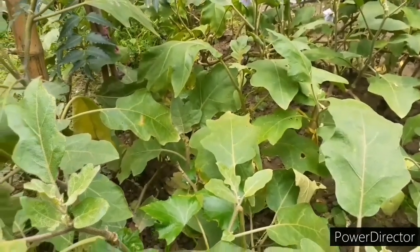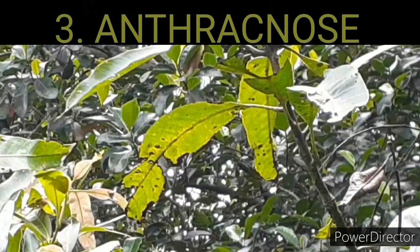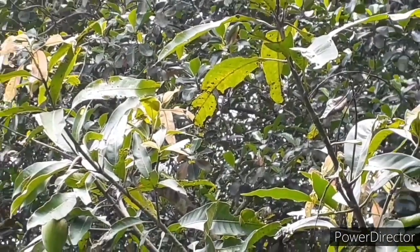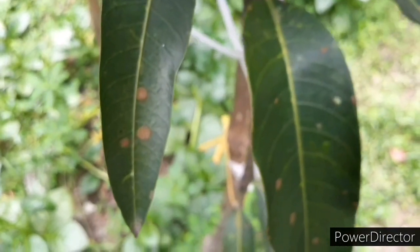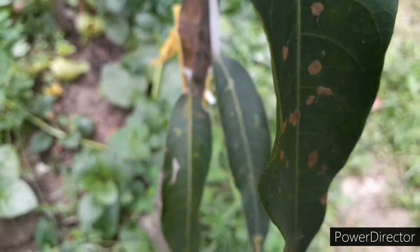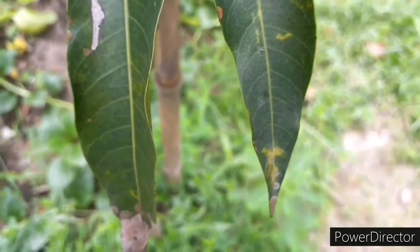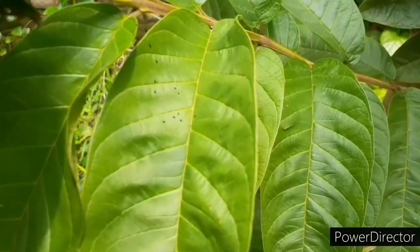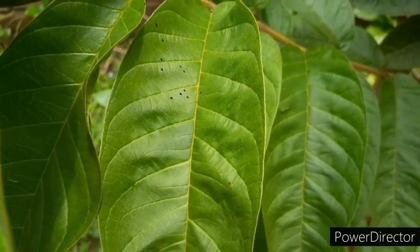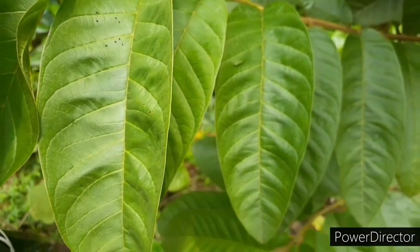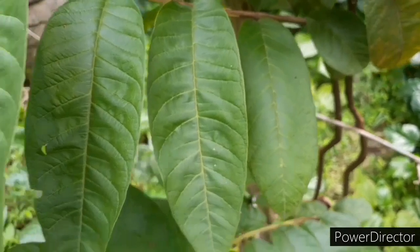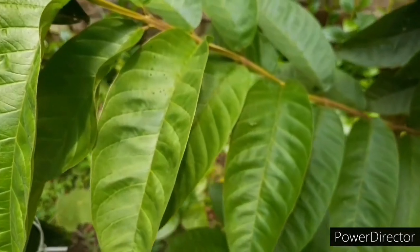The next kind of disease is anthracnose. In this disease, you can identify it by seeing gray spots and black dots surrounded by yellow water on all parts of the leaves of mango, guava, and grape plants. To stop the spreading of this disease, mix Carbendazim in water in the ratio of 1 gram per 1 liter of water and spray on the plant or on the leaves at 15-day intervals.